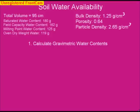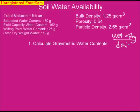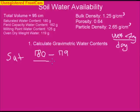When looking at soil water availability, first determine gravimetric water contents using the formula: wet minus dry divided by dry. Starting with saturation, that's 180 minus 119 (the dry weight), divided by 119.